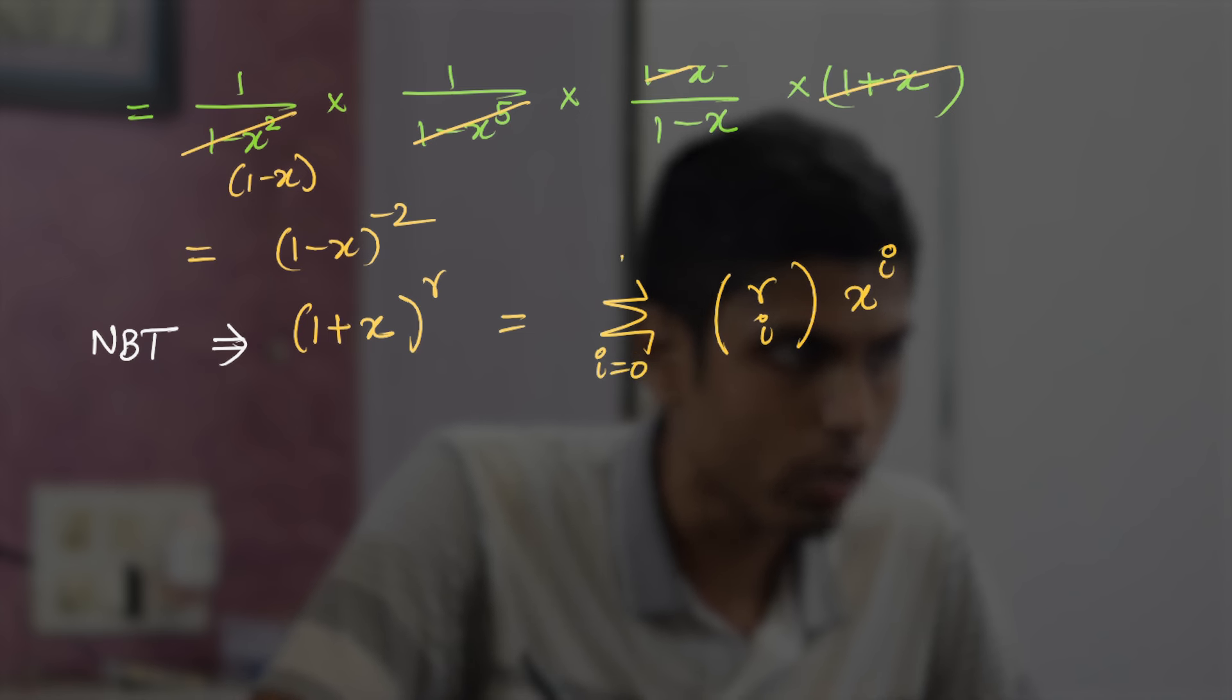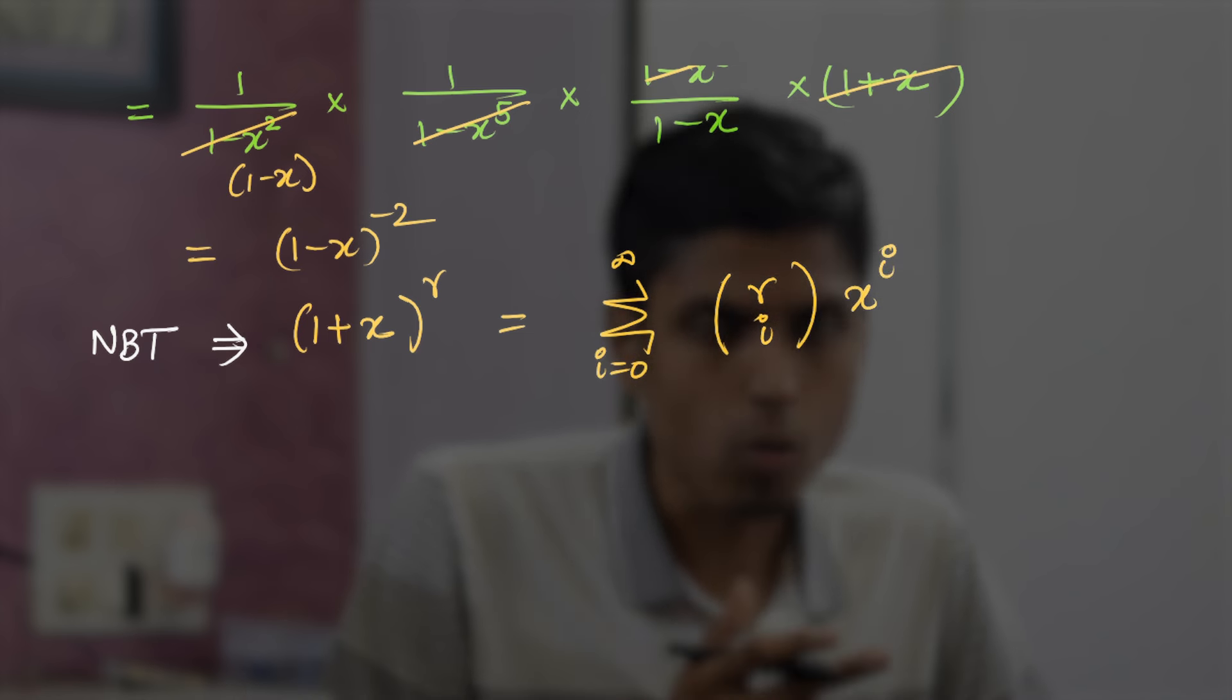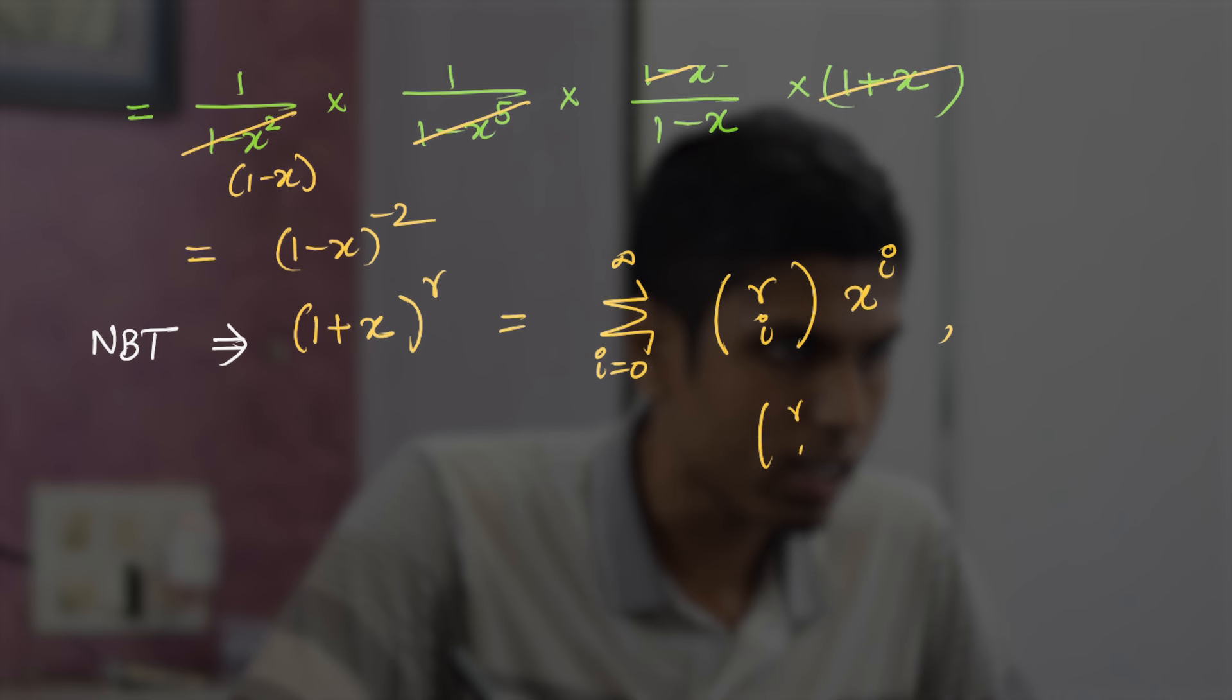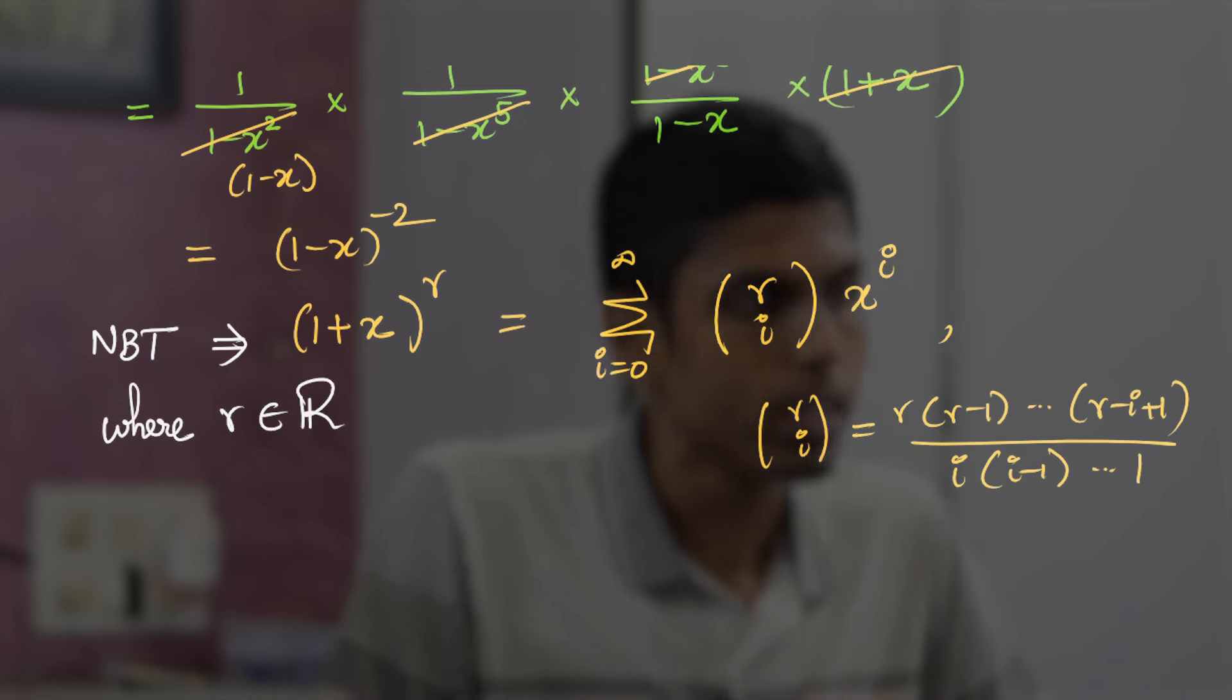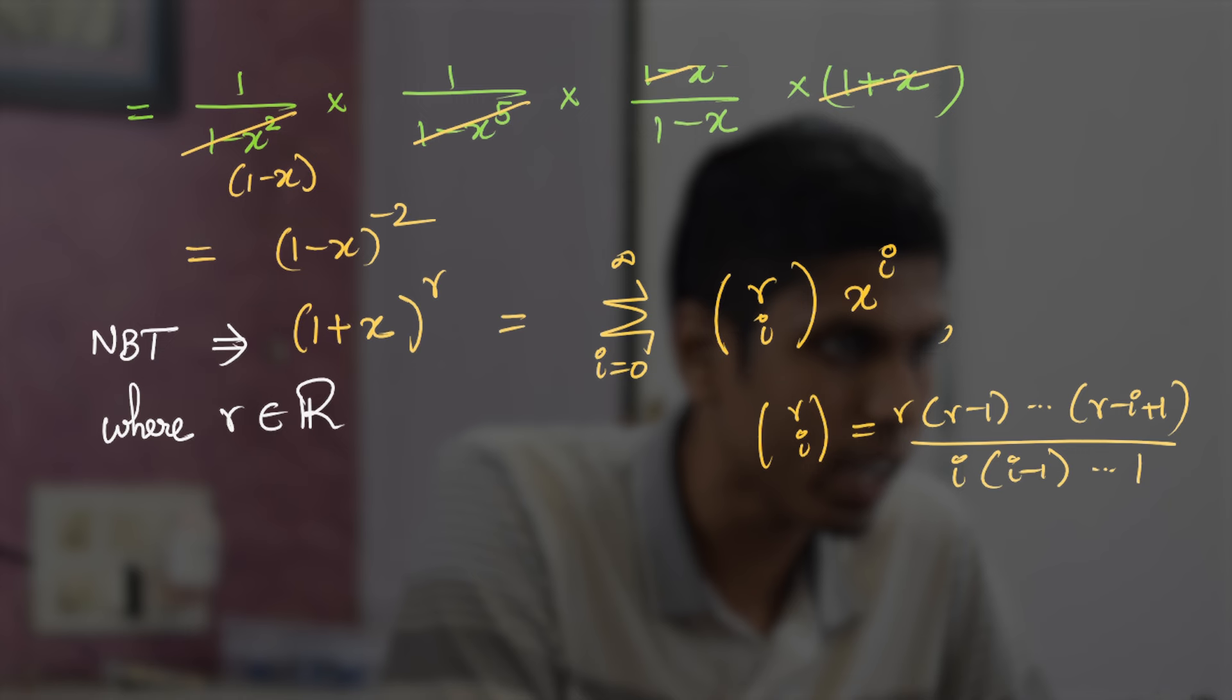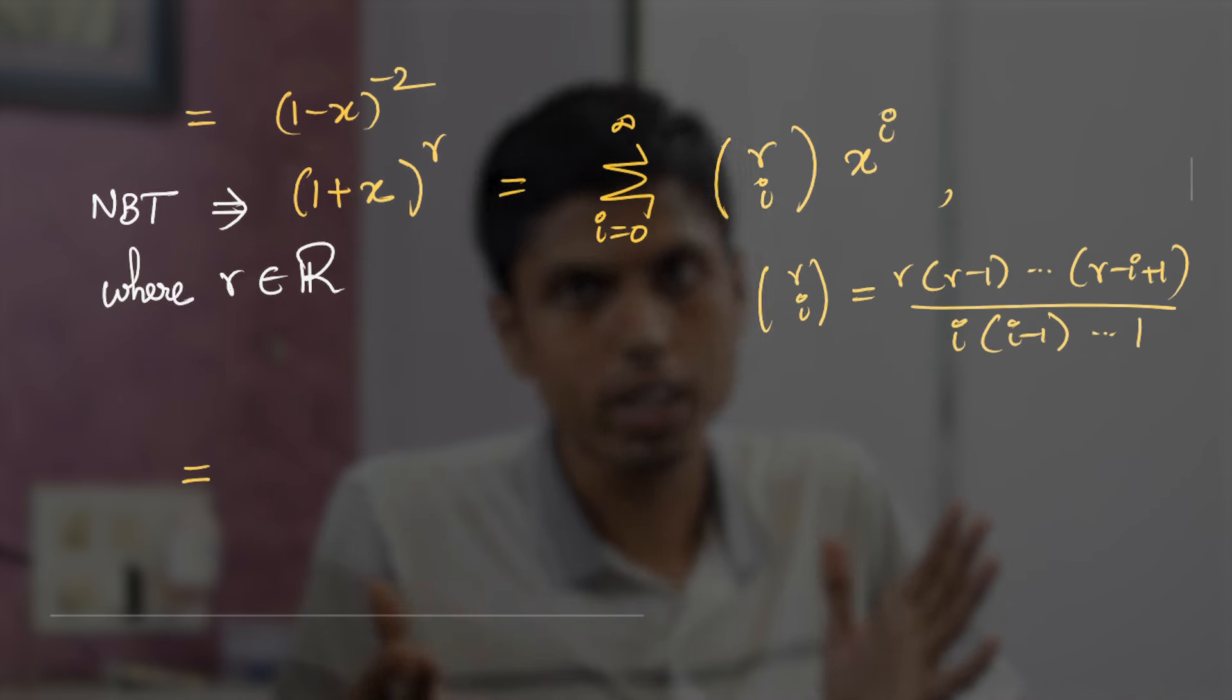So though it may sound weird that 0 to infinity and r choose i is not defined for higher values of i, we can extend the definition by considering r choose i equals r · (r - 1) till (r - i + 1) divided by i · (i - 1) till 1. And note that r is a real. r belongs to the real numbers.